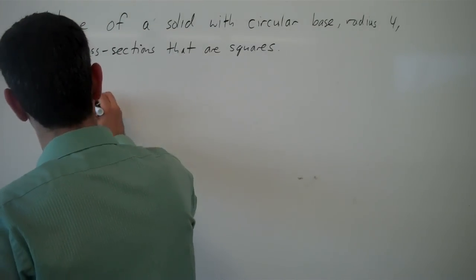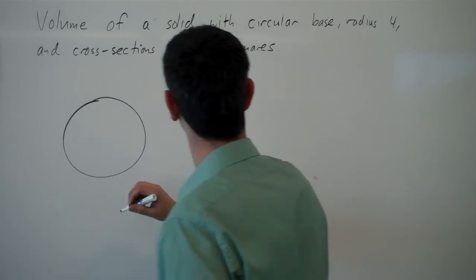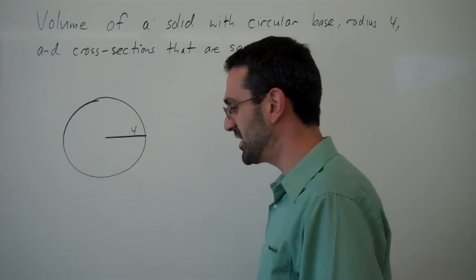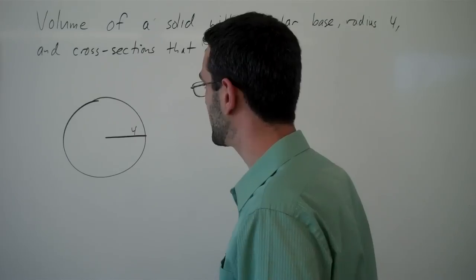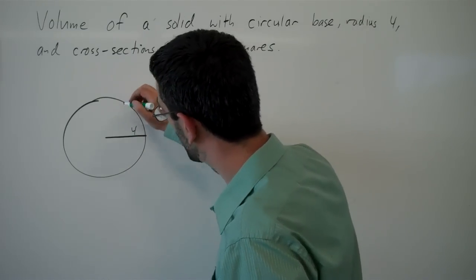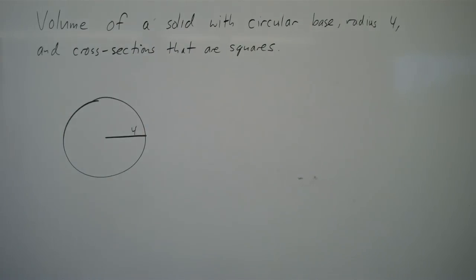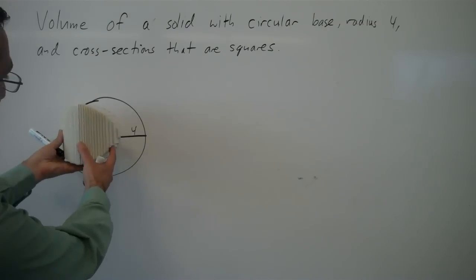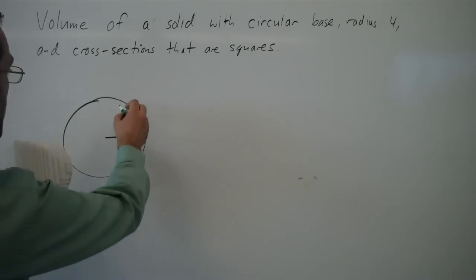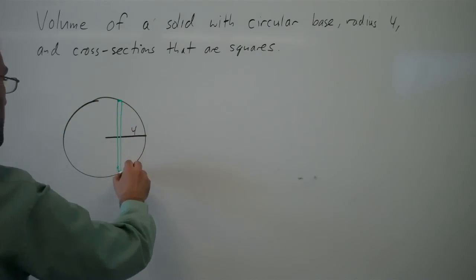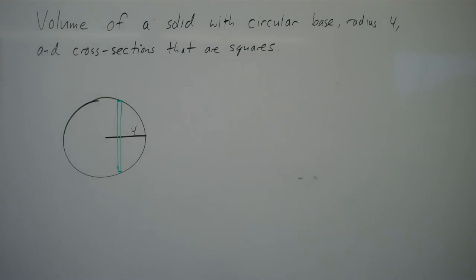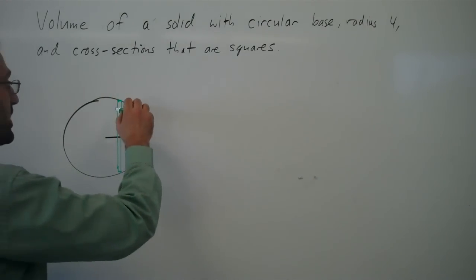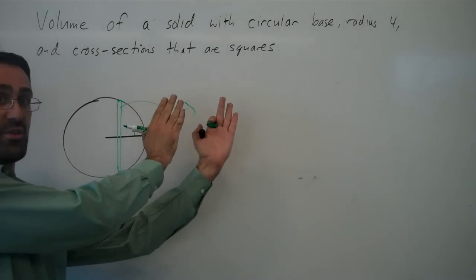So here's our circular base with a radius of 4. And we're imagining that a cross-section or slice is a square. In other words, if we were to take this object and slice it this way, then each of those slices will be a square in its cross-section. So if we were to take this cross-section and turn it out,